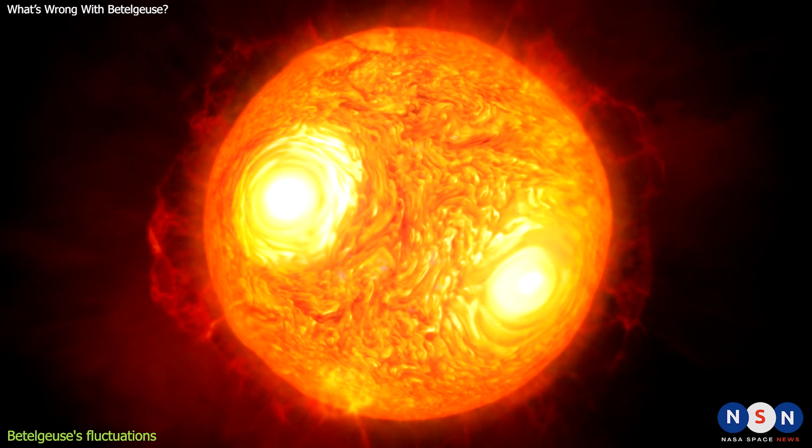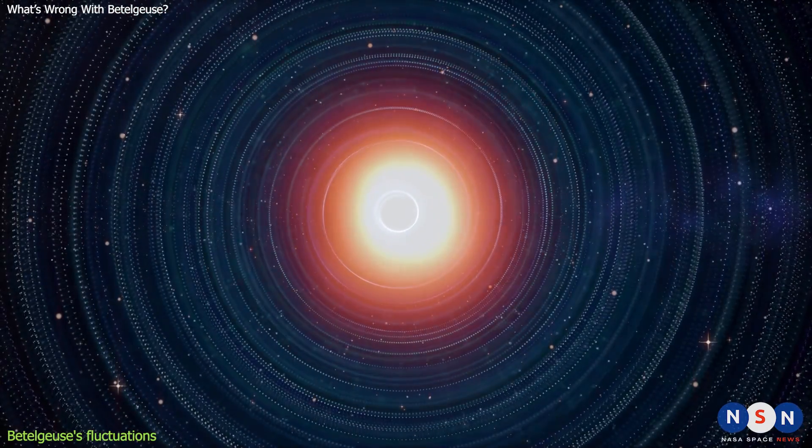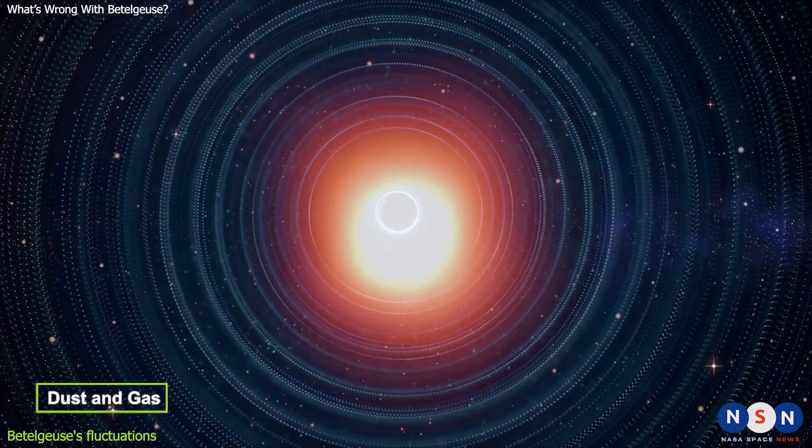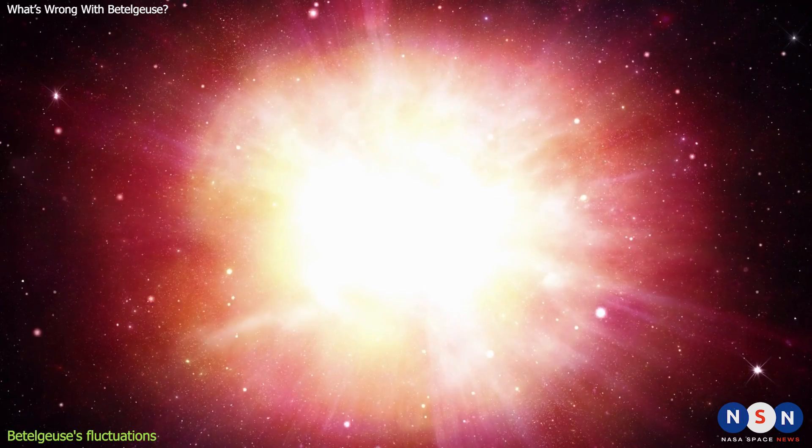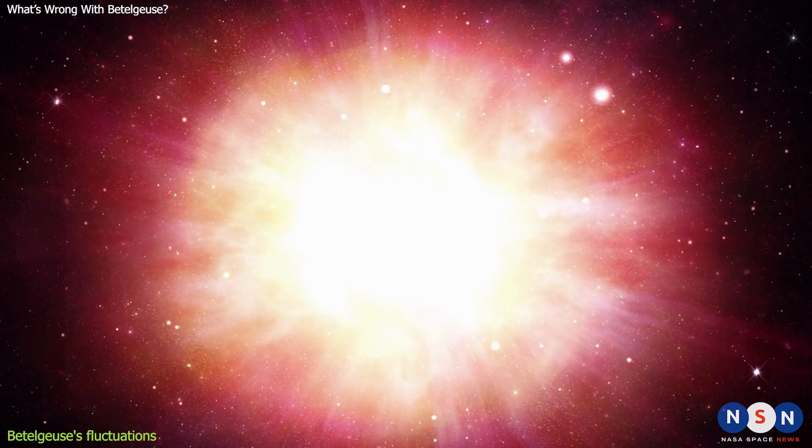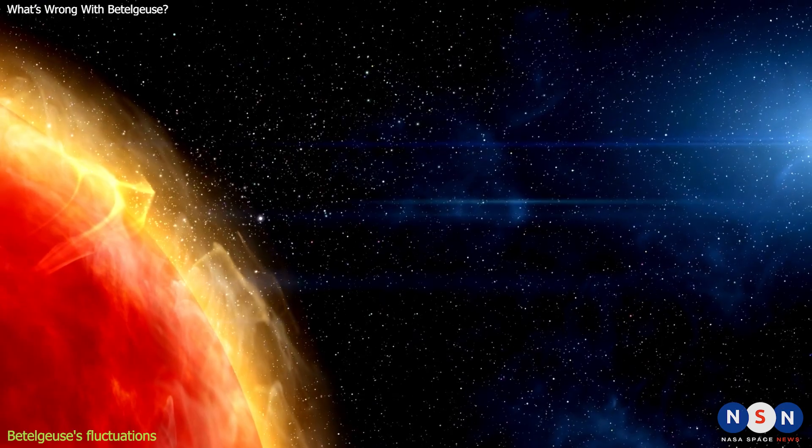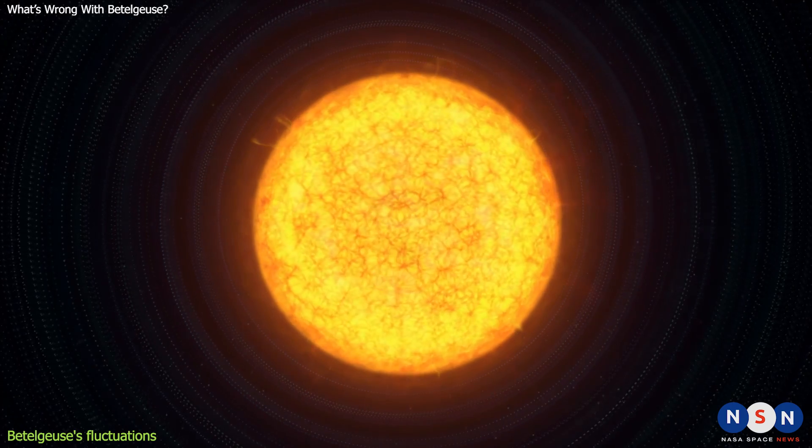These spots can change over time and cause variations in brightness. Another possibility is that Betelgeuse is surrounded by dust and gas that can block or reflect some of its light. Dust and gas can be produced by the star itself, as it sheds its outer layers in powerful stellar winds. They can also come from other sources, such as nearby stars or interstellar clouds. Depending on the amount and distribution of dust and gas, they can make Betelgeuse appear dimmer or brighter.